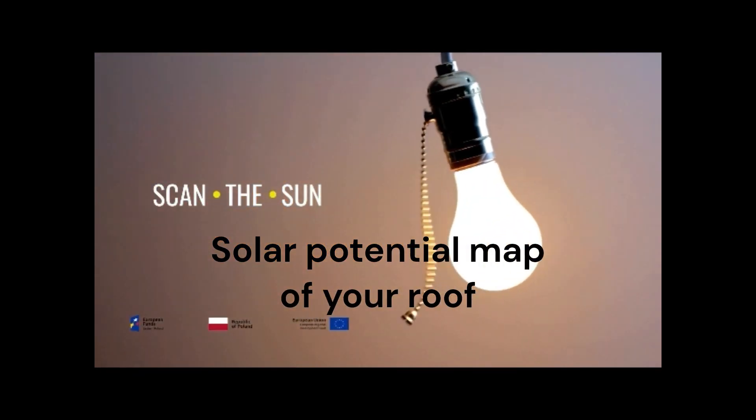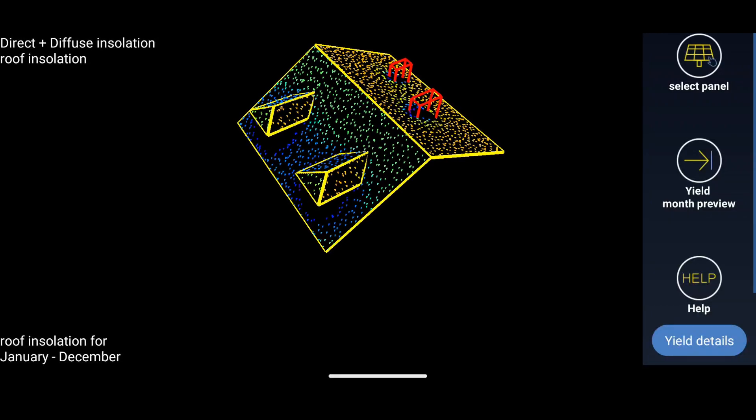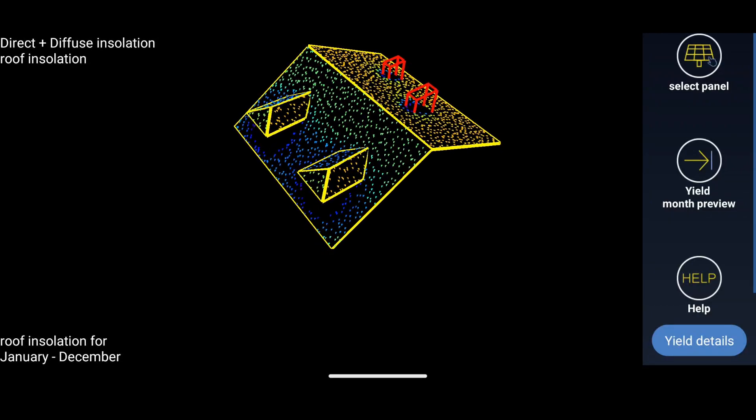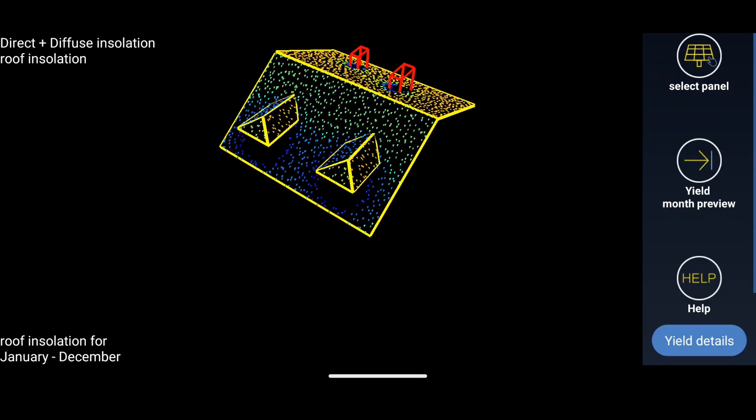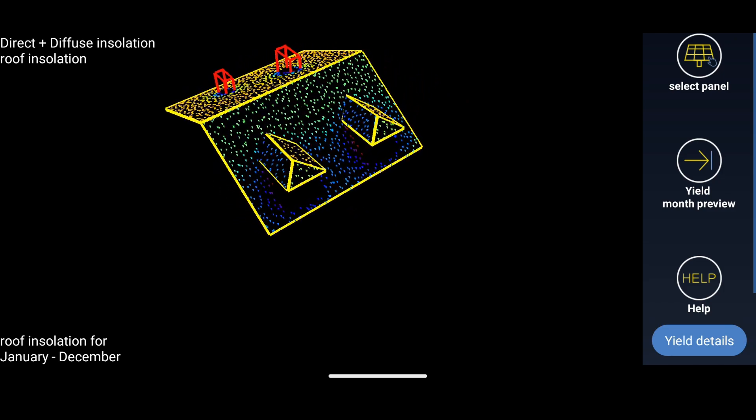The solar potential map will show you the best places for installing solar panels on your roof. Right after measuring the building geometry, the photovoltaic installation design module is displayed.